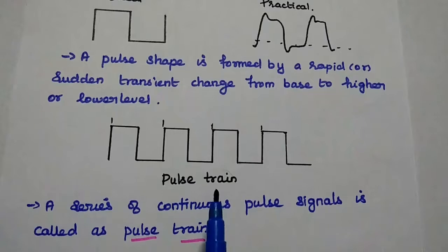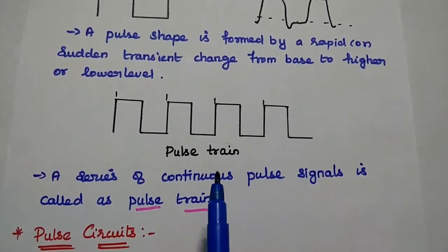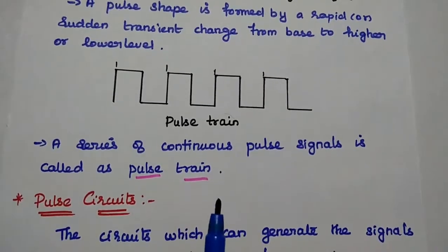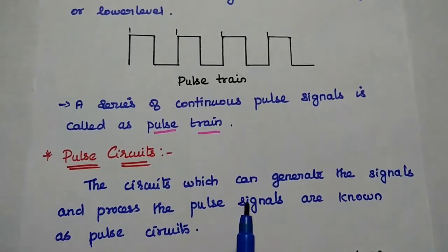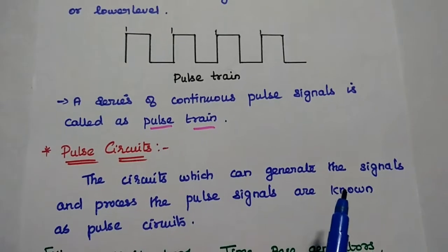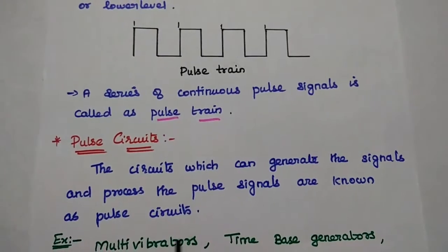A series combination of pulse signals is known as pulse train or train of pulse signals. Next, pulse circuits. Any electronic circuits which can generate and process pulse signals are known as pulse circuits.